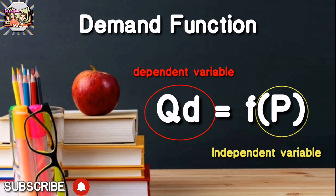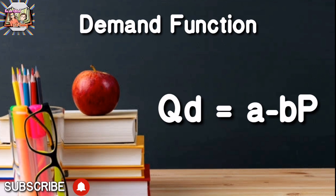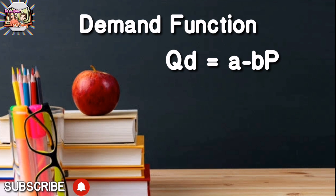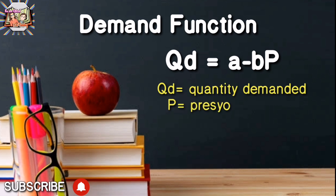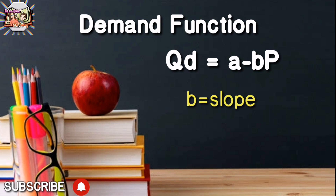Isa pang paraan ng pagpapakita ng demand function ay ang equation na QD = A minus B multiplied by P, kung saan ang QD ay quantity demanded at ang P ay presyo. Ang A naman ay isang intercept na kung saan ito ang halaga ng quantity demanded kung ang presyo ay 0. Ang B naman ay slope na makukuha gamit ang equation na pagbabago ng quantity demanded divided by pagbabago ng presyo.